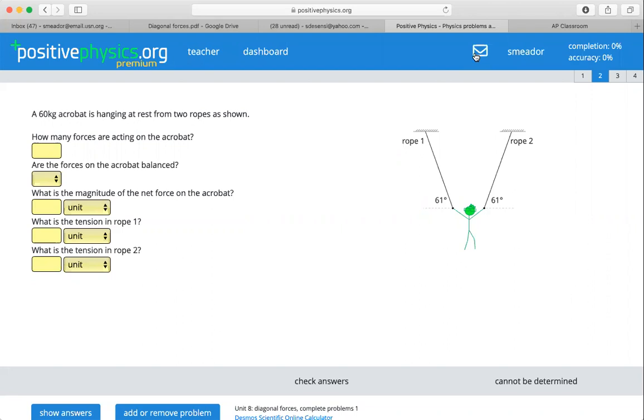A 60 kilogram acrobat is hanging at rest from two ropes as shown. So this tells us two important things. Our mass is 60 kilograms and we're hanging at rest. When it says hanging at rest, that means our acceleration is equal to zero because there's no movement. That tells us F net, which is equal to mass times acceleration, is also equal to zero since acceleration is equal to zero.